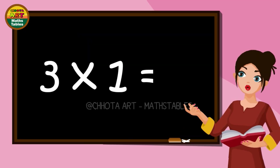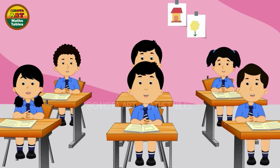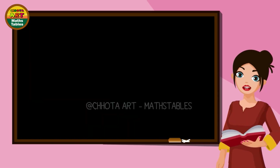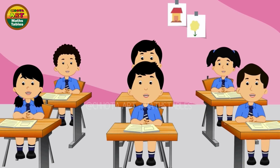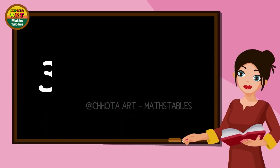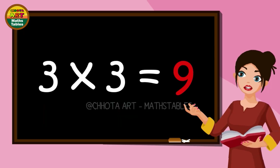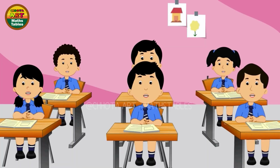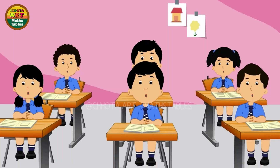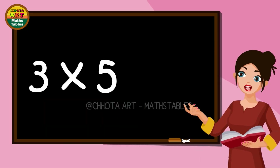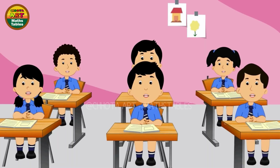Three ones are three. Three twos are six. Three threes are nine. Three fours are twelve. Three fives are fifteen.